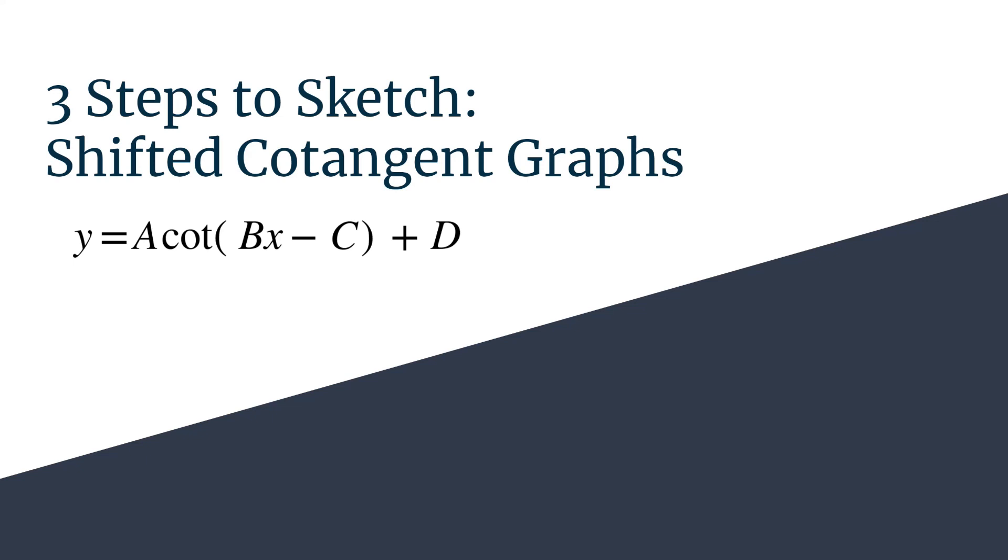A couple notes before we dig into the method. First note that cotangent is the reciprocal of tangent. We probably have already looked at the cotangent graph. If not, check the links in the video description. Also note that this method is for our shifted cotangent graphs. They have that C and D term or at least one of them, and so it's going to be a modification of our method for graphing basic cotangent graphs. If you'd like to see that method in action or with examples, you can check the links out as well.